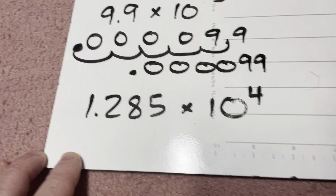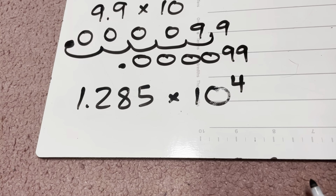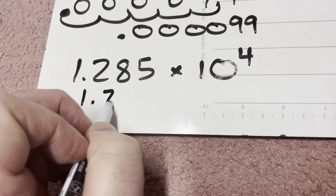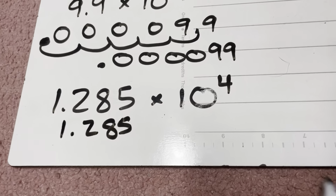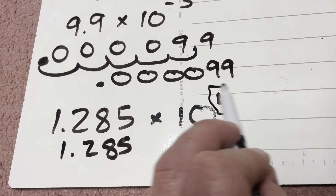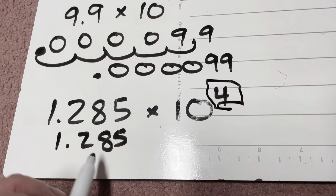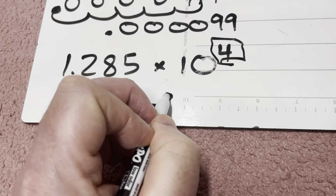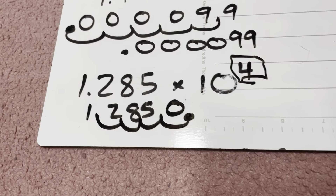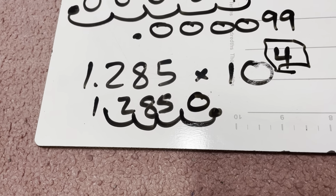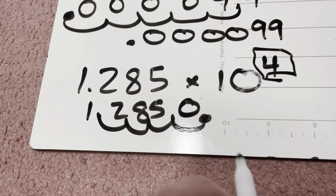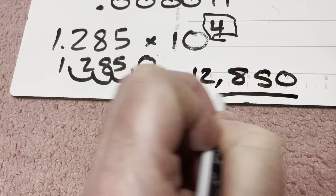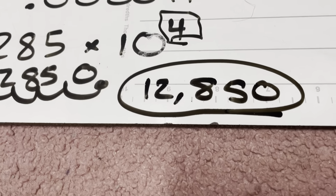Last one: 1.285 times 10 to the power of 4. We're starting with 1.285 and moving that decimal four places to the right because it's a positive exponent: 1, 2, 3, 4. Put a zero there. We basically end up with 12,850. That's our final answer.